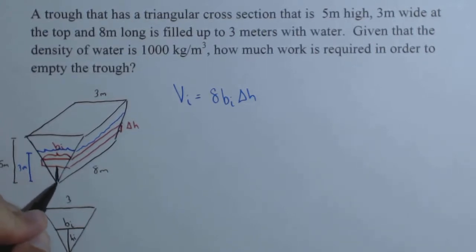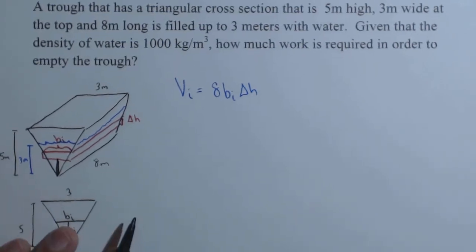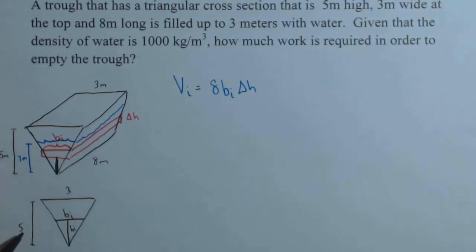It's the distance from the peak, or the very bottom of our trough, up to our slice. We should be able to see this similar triangle relationship now in the triangle we've drawn here. So, 3 is to 5 as b sub i is to H sub i.